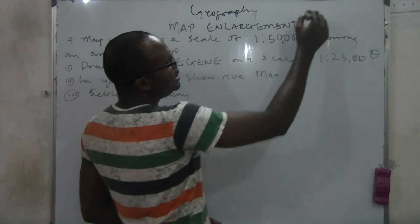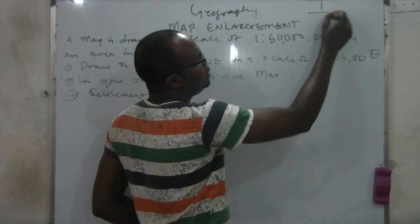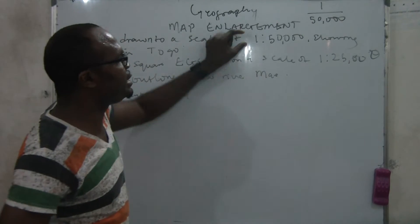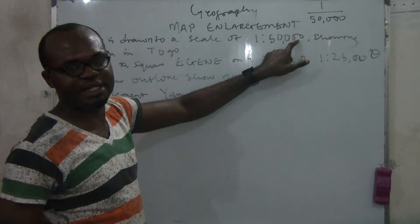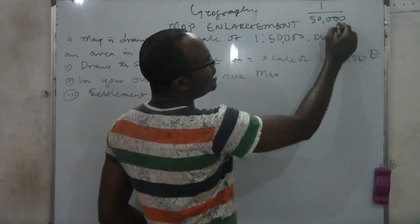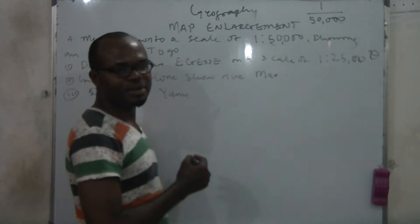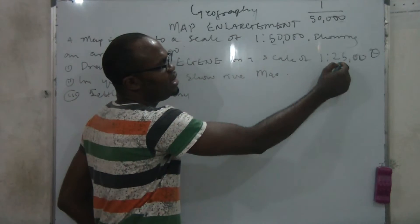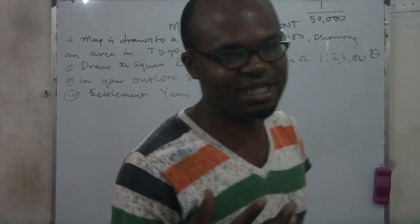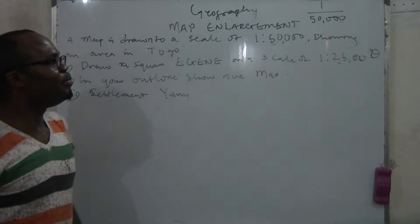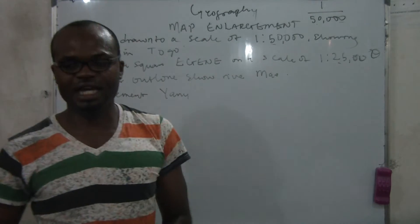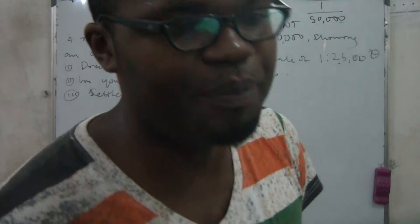The denominator — like I told you, 1 is the numerator and 50,000 is the denominator. When you say 1 is to 50,000, it is the same as saying 1 over 50,000. So if the denominator of the given is bigger than the denominator of the expected, then you need an enlargement map. But if the denominator of the given is less than the denominator of the expected, then you need a reduction map.